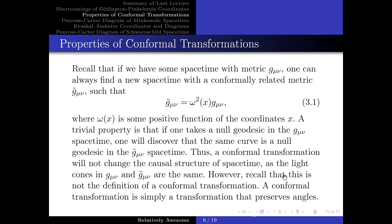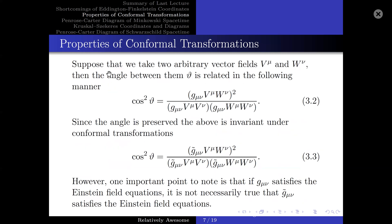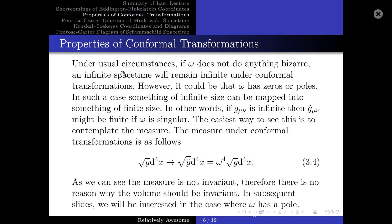However, recall that this is not the definition of a conformal transformation. A conformal transformation is simply a transformation that preserves angles. Suppose that we take two arbitrary vector fields v^μ and w^ν, then the angle between them θ is related in the following manner. Since the angle is preserved, the above is invariant under conformal transformations, and thus g_μν can simply be replaced by g̃_μν. However, one important point to note is that if g_μν satisfies the Einstein field equations, it is not necessarily true that g̃_μν satisfies the Einstein field equations.